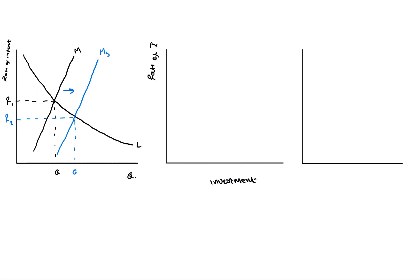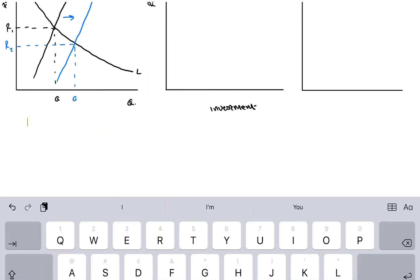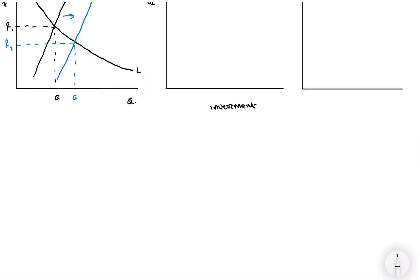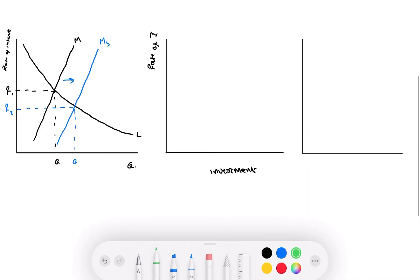Now, investment is going to increase when interest rates are at its lowest. So let's put that into the graph. Therefore, it's going to be downward sloping, a little bit like this.